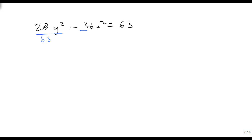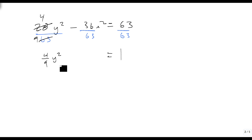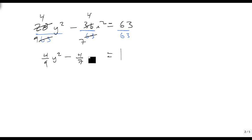So the first thing we have to do is divide everything by 63. The right side easily becomes 1. For 28 over 63, they share a factor of 7, which leaves 4 and 9 — so this becomes (4/9)y squared. For 36 over 63, they share a factor of 9, which leaves 4 and 7 — so this is (4/7)x squared.